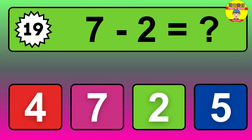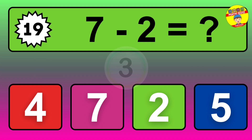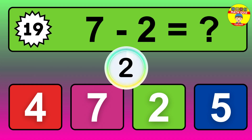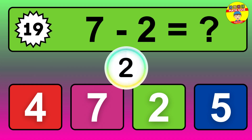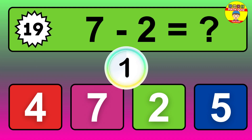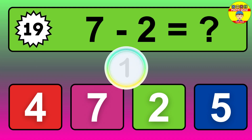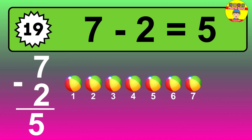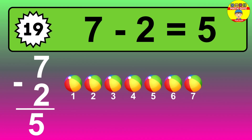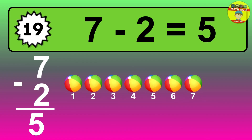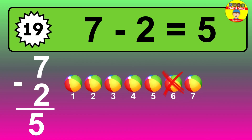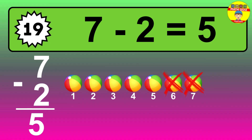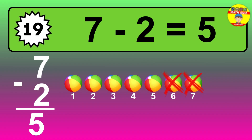Question 19. 7 minus 2 equals what? The answer is 7 minus 2 is 5. Let's count it: 1, 2, 3, 4, 5.